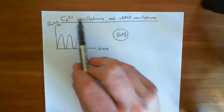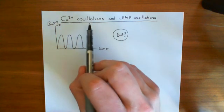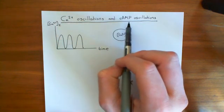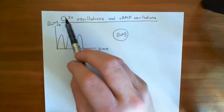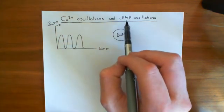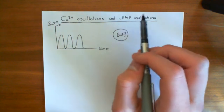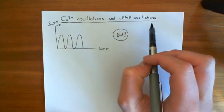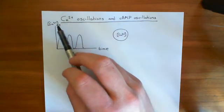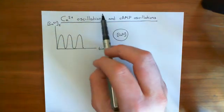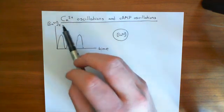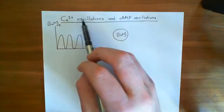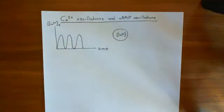Cyclic AMP and calcium are really the two great intracellular signalling molecules. When cyclic AMP was discovered in the 1950s, it put a halt on research into calcium signalling because people thought cyclic AMP was the intracellular signalling molecule. But then in more recent years — the 1980s — calcium went back into fashion, and people started looking at it as another very important intracellular signalling molecule. Now we see that they're both interacting together, and we're going to look at that in this video.